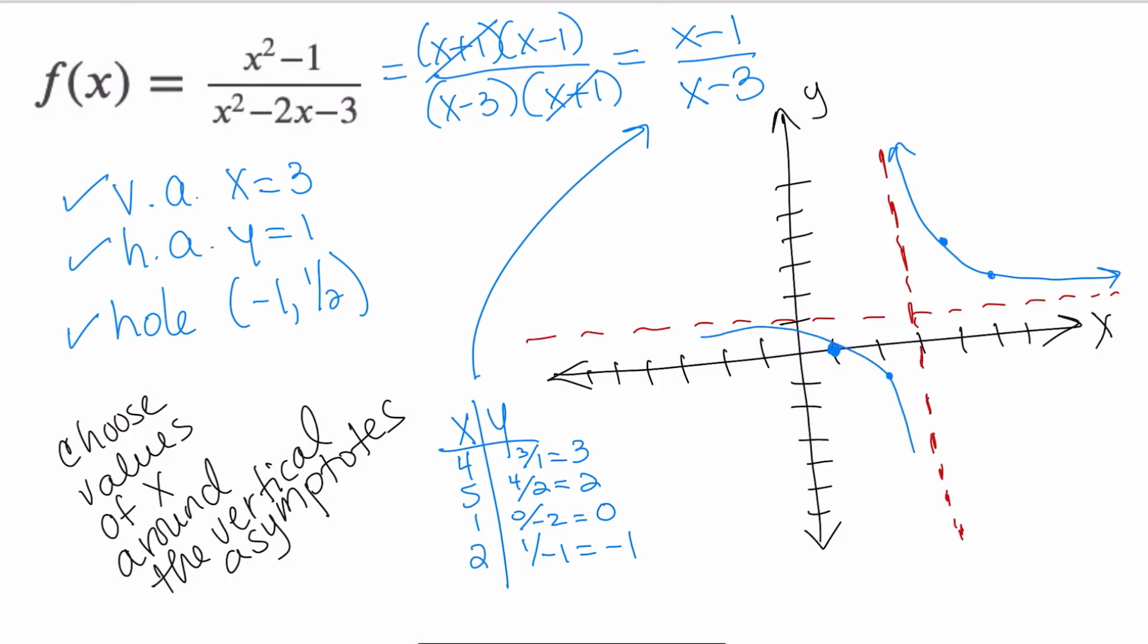So then here is going to be my other part of the graph. And I can make that longer if I want to. One of the things we have to remember is that we do in fact have a hole and the hole occurs at the point (-1, 1/2).